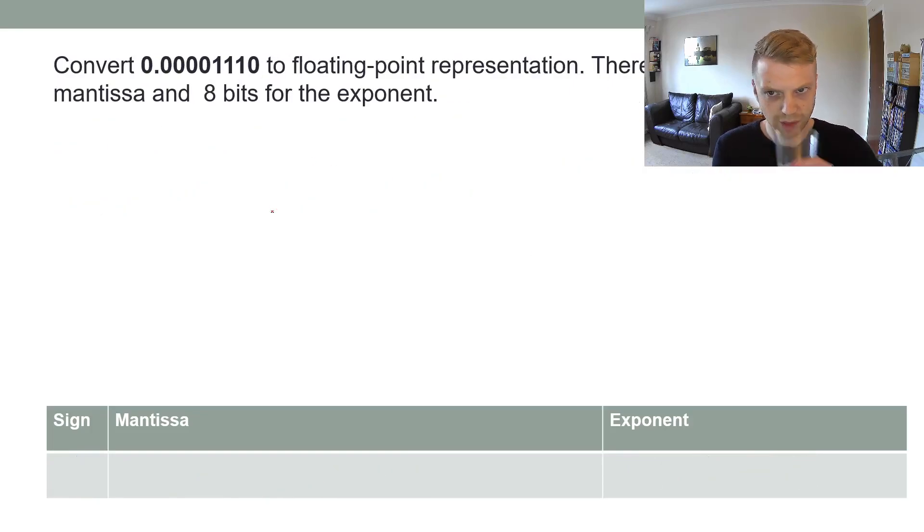Slightly different example this time: 0.00001110. This one starts off with a bunch of zeros after the decimal point. Normalized form wants a one to be right after the decimal point. Before we've already got the zero, now we need to move these ones closer. To do that, you do 0, and you get rid of these four zeros, and just do 1, 1, 1, 0, times 2. Now you're counting how many you got rid of—we got rid of 4, so we write negative 4.